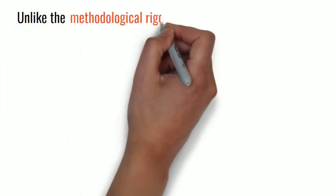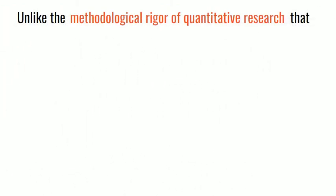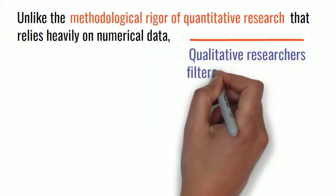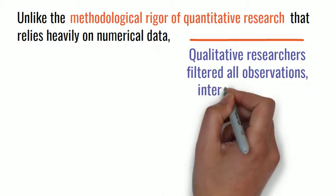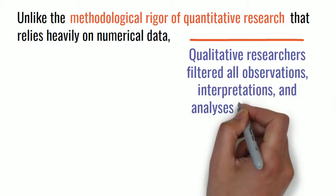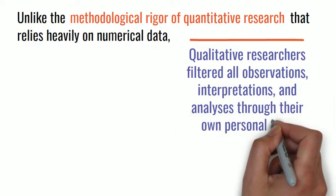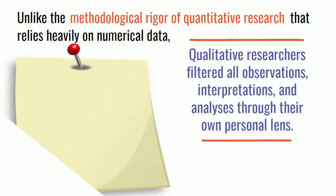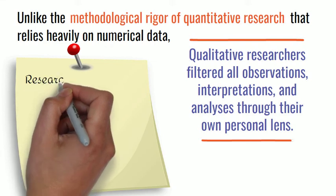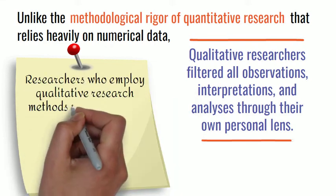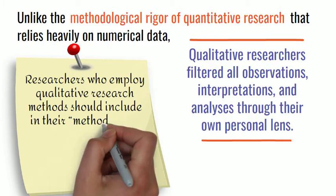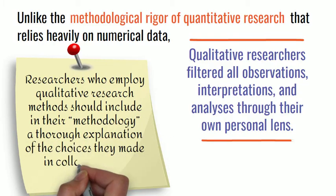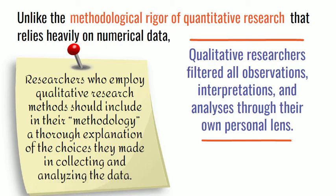Hence, unlike the methodological rigor of quantitative research that relies heavily on numerical data, qualitative researchers filter all observations, interpretations, and analyses through their own personal lens. This is the reason why, as Pritha Bhandari suggests, researchers who employ qualitative research methods should include in their methodology a thorough explanation of the choices they made in collecting and analyzing data.